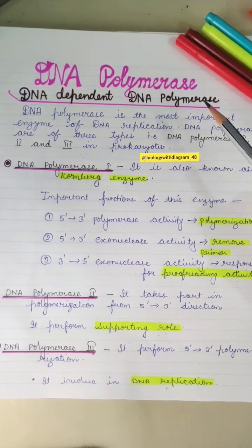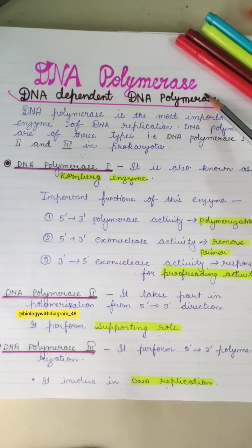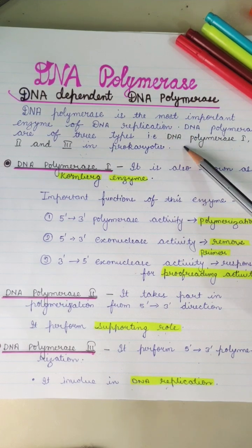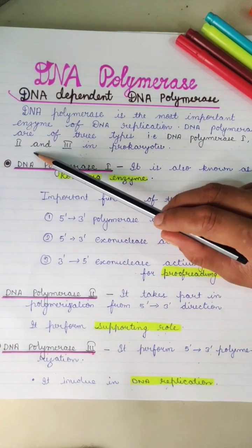DNA-dependent DNA polymerase plays a very important role in DNA replication. It is of three types: DNA polymerase 1, DNA polymerase 2,